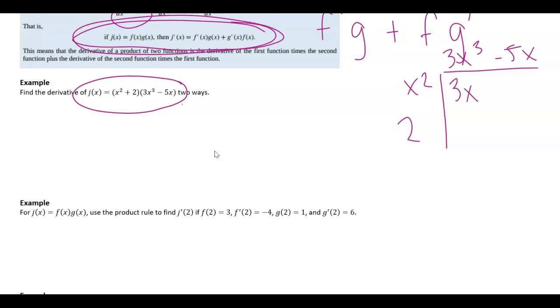So I'd get 3x to the fifth minus 5x cubed, 6x cubed, and then minus 10x. So I would end up getting that j is 3x to the fifth plus x cubed minus 10x.